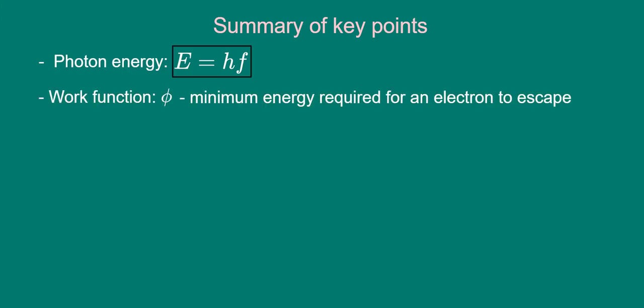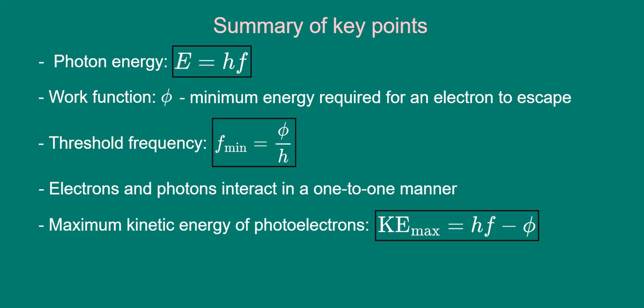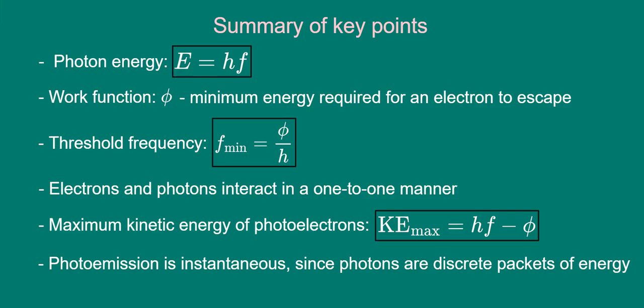To sum up, Einstein's model beautifully explains the photoelectric effect via the concept of photons, discrete packets of light energy, where the energy of a photon is given by Planck's constant multiplied by the frequency of the radiation. An electron at a metal surface requires a minimum energy to escape, known as the work function. This implies a minimum or threshold frequency, which is needed for the light to induce photo emission. Electrons and photons interact in a one-to-one manner. An electron can only absorb a single photon. Thus, below the threshold frequency, photo emission cannot occur, irrespective of the intensity or duration of the radiation. Photoelectrons emerge with a range of kinetic energies, but with an upper limit or maximum. This maximum increases with frequency but doesn't depend on intensity. And finally, the discrete nature of photons explains why photo emission occurs without a time delay.